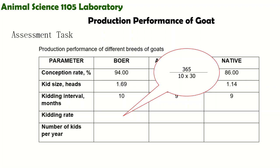Where did we get that formula? Kidding rate means how many times the goat gives birth within one year. We get 365 from the number of days in a year, divided by the kidding interval. We multiply the kidding interval by 30 to convert it into days.